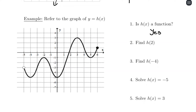Find h of 2. We know x equals 2, so on the graph I go to x equals 2 and see where the function lands — it's at positive 1. So h of 2 equals positive 1. Find h of negative 4: x equals negative 4, and the function lands at the coordinate (negative 4, negative 5). So h of negative 4 equals negative 5.